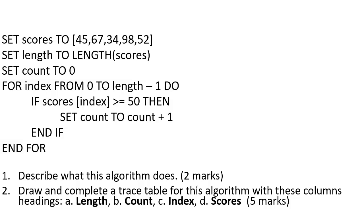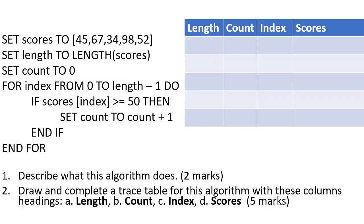Question two is to complete a trace table, a trace through of this algorithm with these headings for five marks. So to answer question one, I'm going to start with question two. So I'll draw myself a table here - it is four columns by six rows and I can see the headings: length, count, index, and scores.